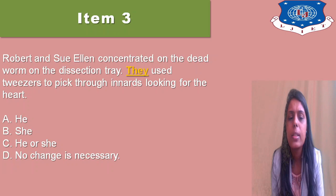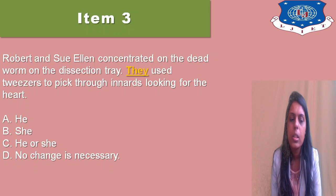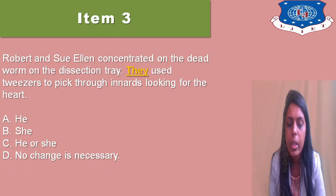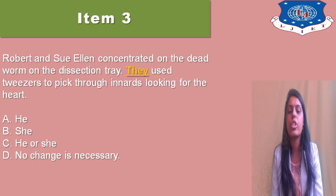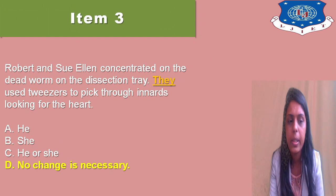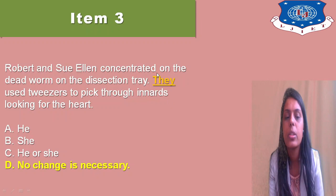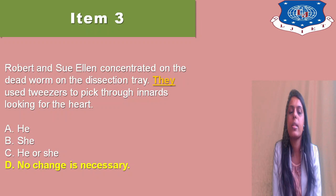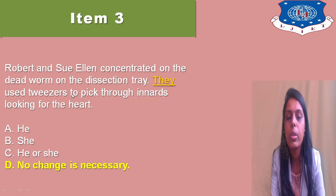Question three: 'Robert and Sue Ellen concentrated on the dead worm on the dissection tray. They used tweezers to pick through its innards looking for the heart.' Should we use 'they used,' 'he used,' or 'she used,' or no change? The answer is no change — a plural pronoun 'they' is used because both Robert and Sue Ellen are referenced, and they used tweezers to pick through the innards.